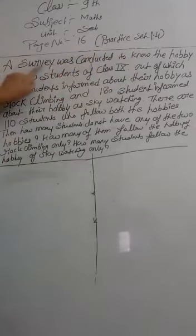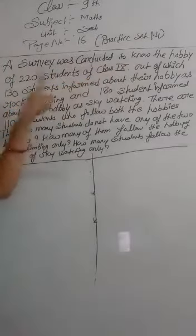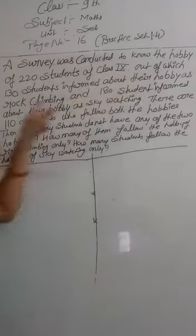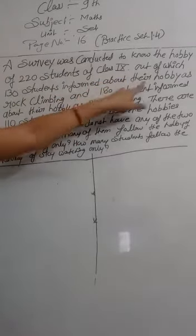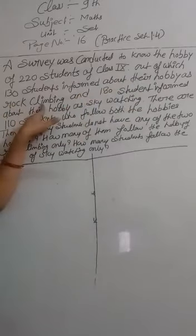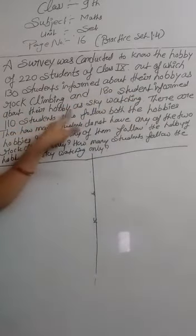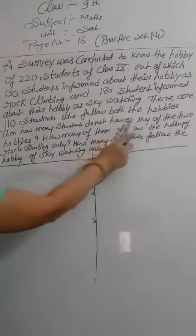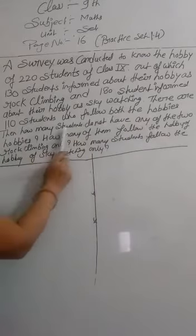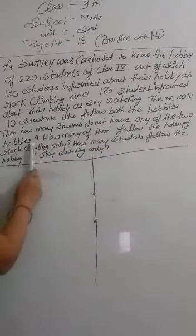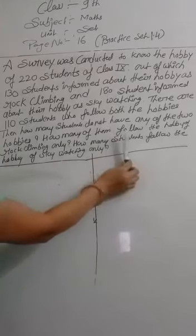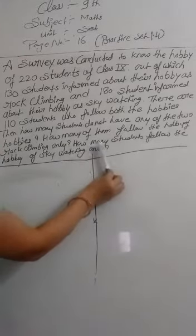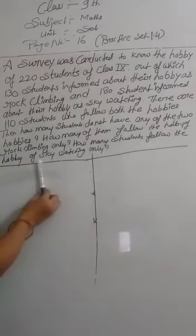Question number 4 is: a survey was conducted to know the hobby of 220 students of class 9, out of which 130 students informed about their hobbies as rock climbing and 180 students informed about their hobbies as sky watching. There are 110 students who follow both the hobbies. Then how many students do not have any of the two hobbies? How many students follow the hobby of rock climbing only? How many students follow the hobby of sky watching?